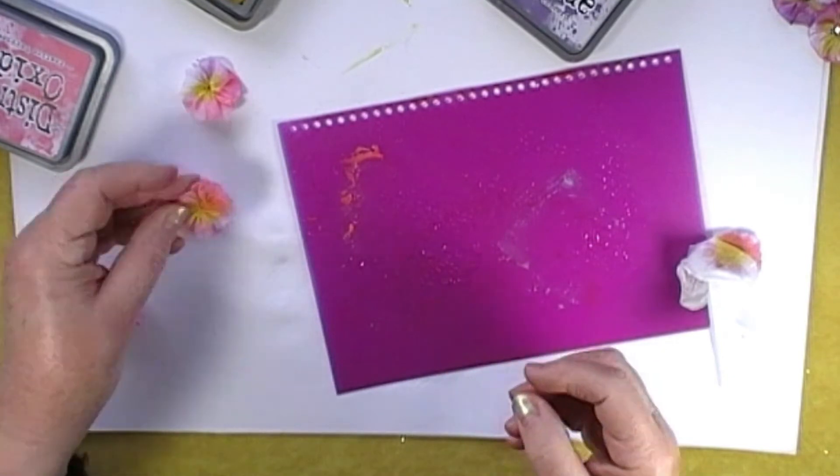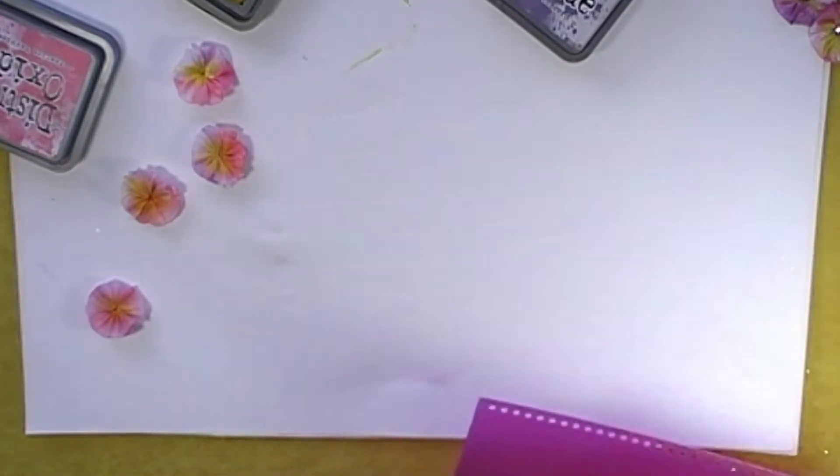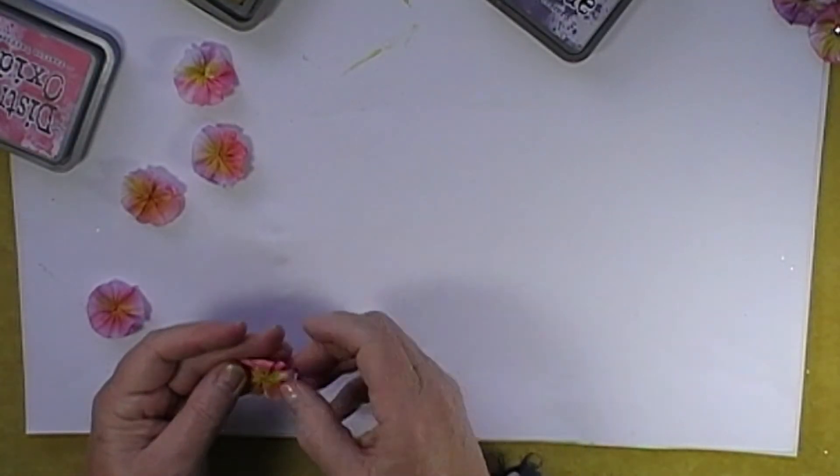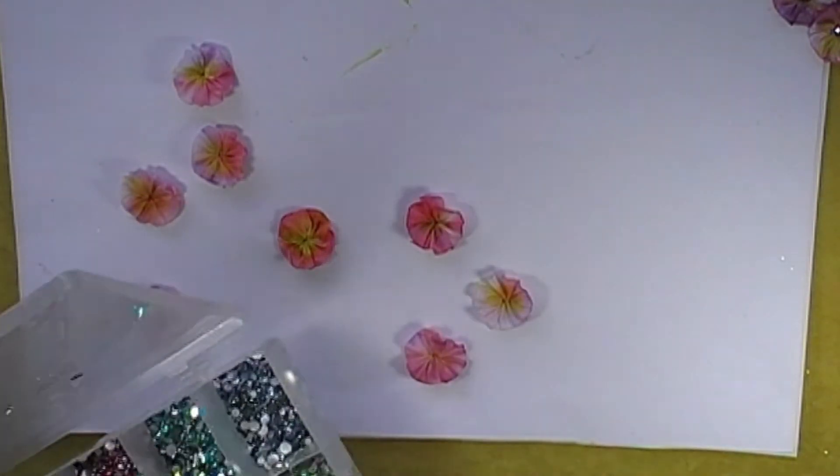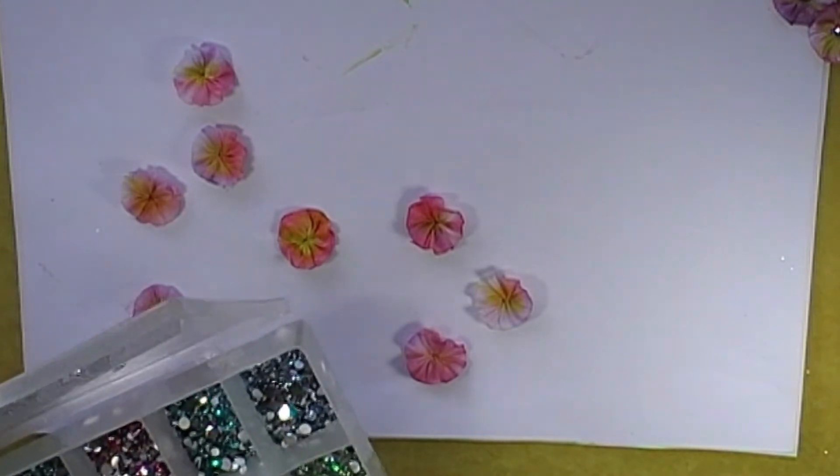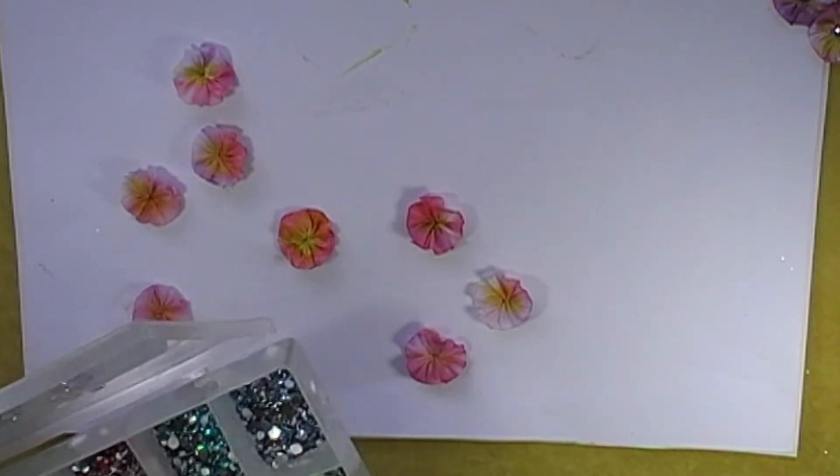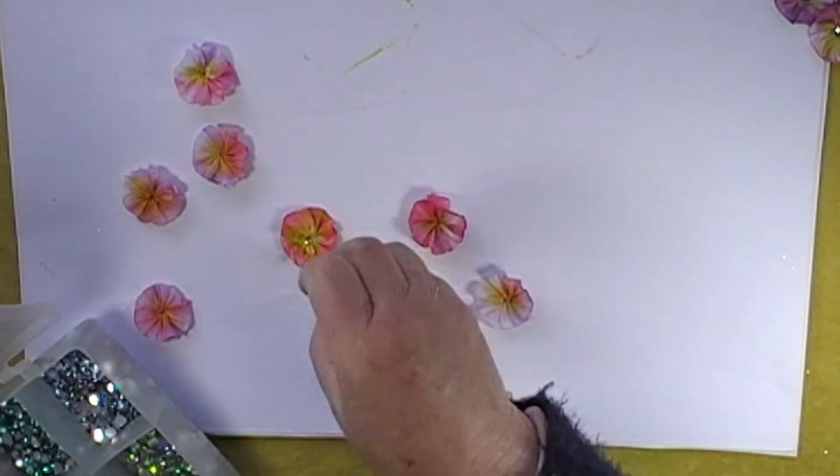All right there we go. Now when they're dry you can put a little pearl or a little diamante or something in the middle. These ones are almost dry. I'll just grab a little diamante and glue it in the middle there like that.